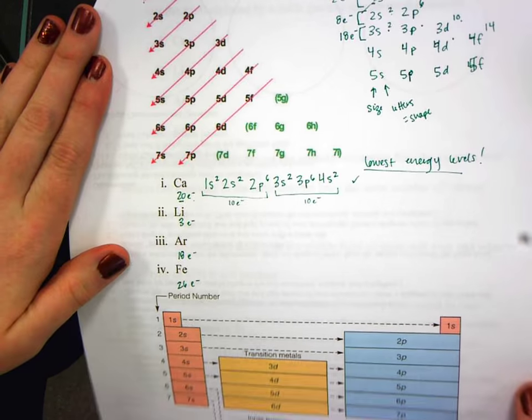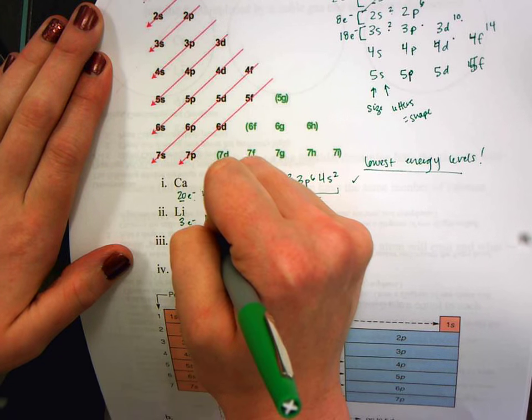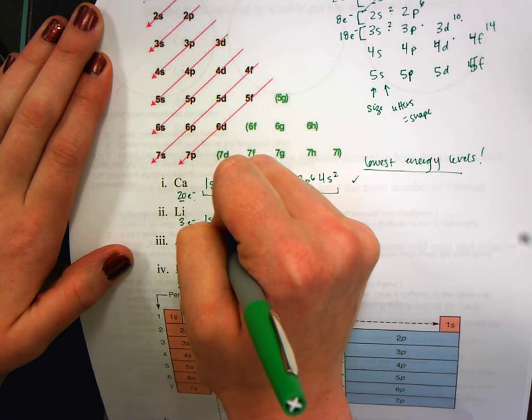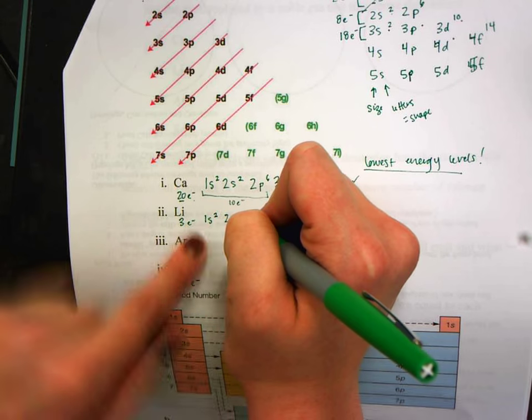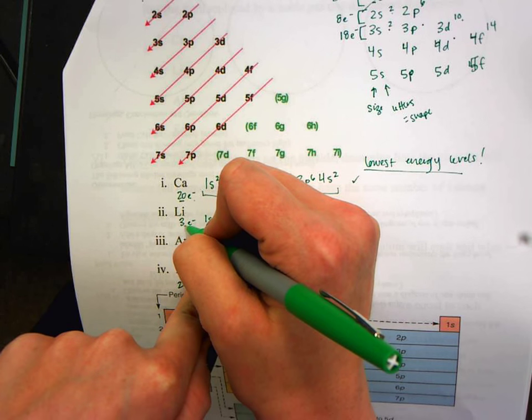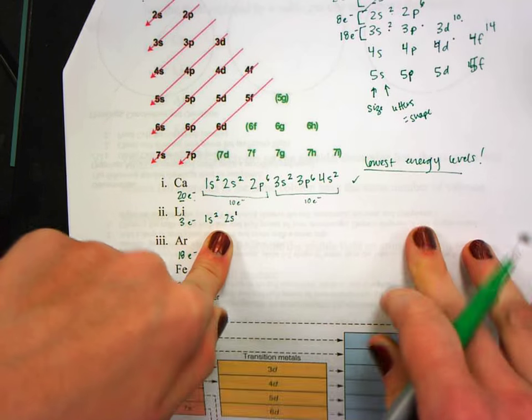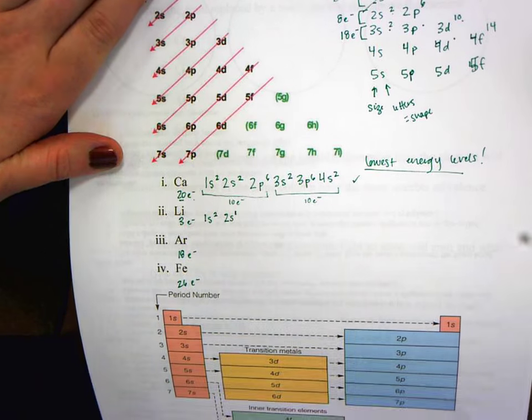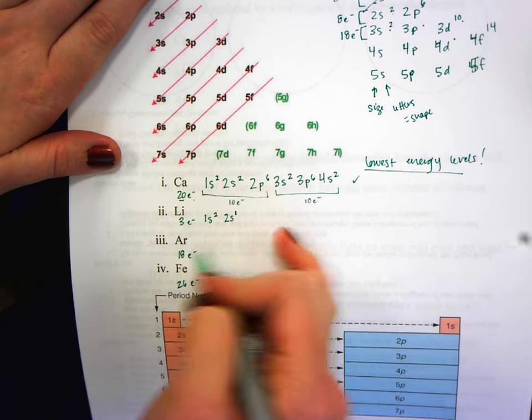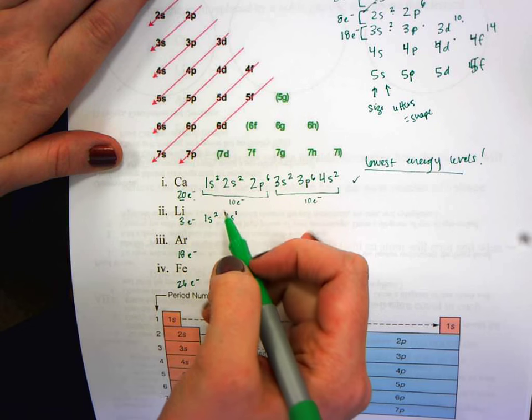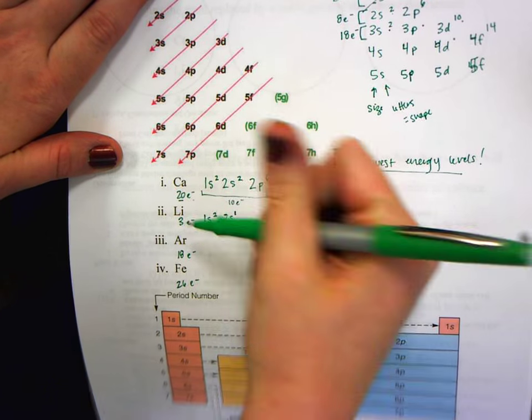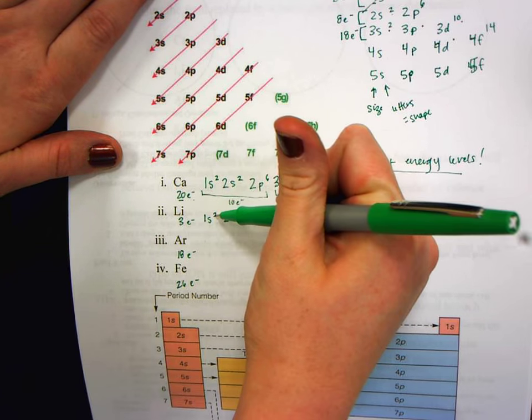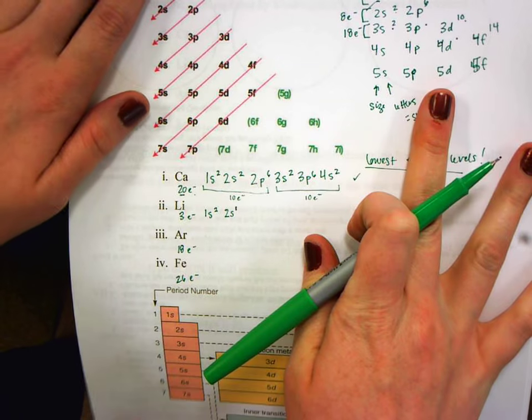So let's look at lithium. Lithium, 3 electrons. So again, I always start the same place, 1s. That can hold 2. And then I'm going to go to my next line, which is 2s. Since I only have one more electron to place, I'm going to say 2s1. So now I have my 3 electrons placed. But notice that this s orbital isn't as full as it could be because this element is out of electrons. So since lithium only has 3, that means I only get to place 3 electrons total.